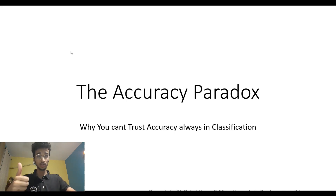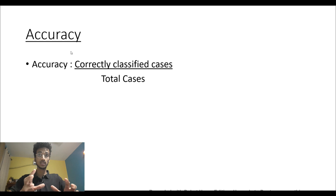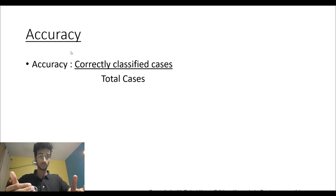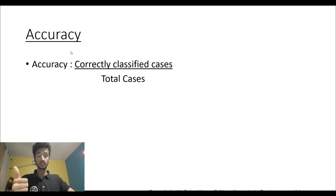First, let's start by defining what accuracy actually is. In statistics, accuracy is the correctly classified cases divided by total cases. That's the definition. Let me show you an example where this definition is going to give you a very bad result.